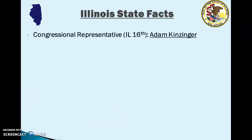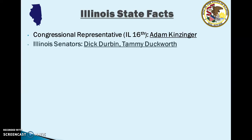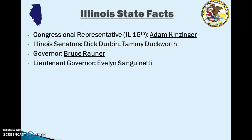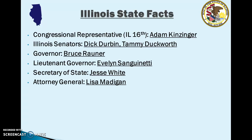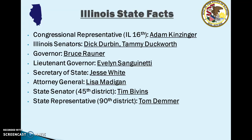Our congressional representative from the Illinois 16th is Adam Kinzinger. The two senators from Illinois are Dick Durbin and Tammy Duckworth. The current governor of Illinois is Bruce Rauner and his lieutenant governor is Evelyn Sanguinetti. Illinois's current secretary of state is Jesse White, and the current attorney general is Lisa Madigan. Our state senator from the 45th district is Tim Bivens, and our state representative from the 90th district is Tom Demer — so for state senator and state rep, you can just remember Tim and Tom.